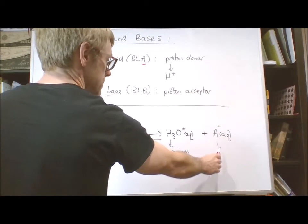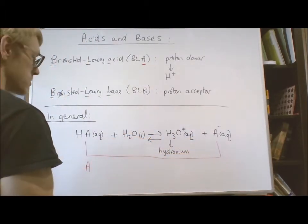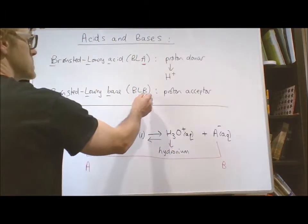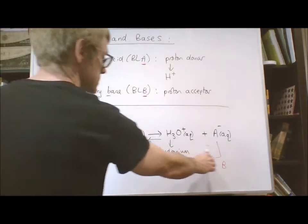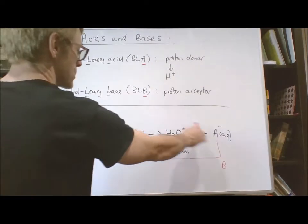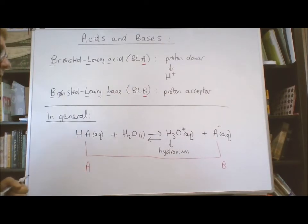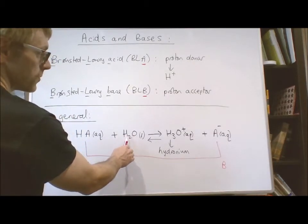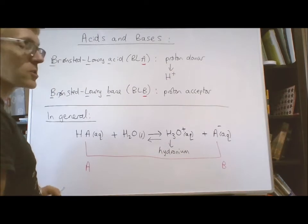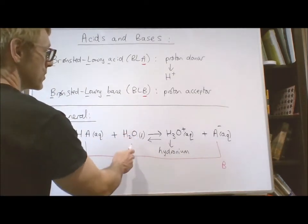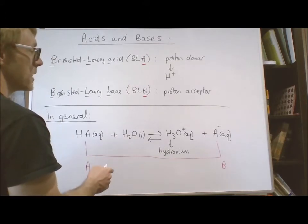Going back across the arrow, A⁻ would have to accept a proton — so A⁻ is behaving as an acceptor, and we know it's a base, because bases accept protons. Similarly, looking at oxygen in water: oxygen originally has two protons, but after the reaction it has three, so oxygen has accepted an extra proton. The whole water molecule is therefore behaving as a base.